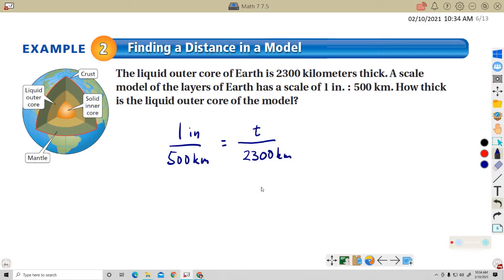So let's cross multiply here. 1 times 2300 is 2300. 500 times T is 500T. And now we divide both sides by 500 to solve for T. And again, this is the calculator one because the numbers get weird. 2300 divided by 500. 4.6.